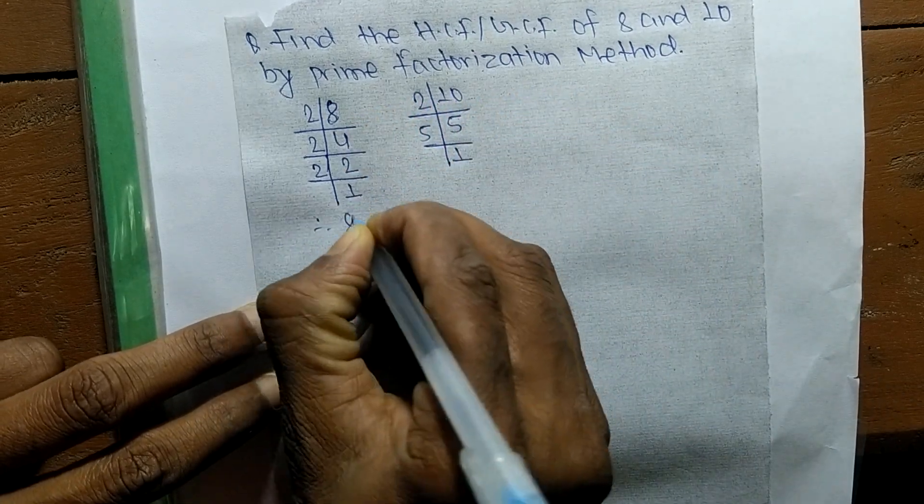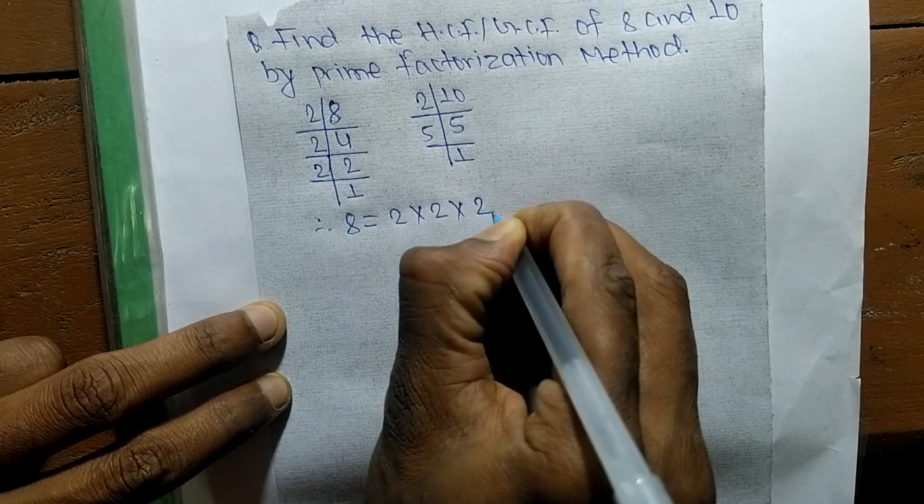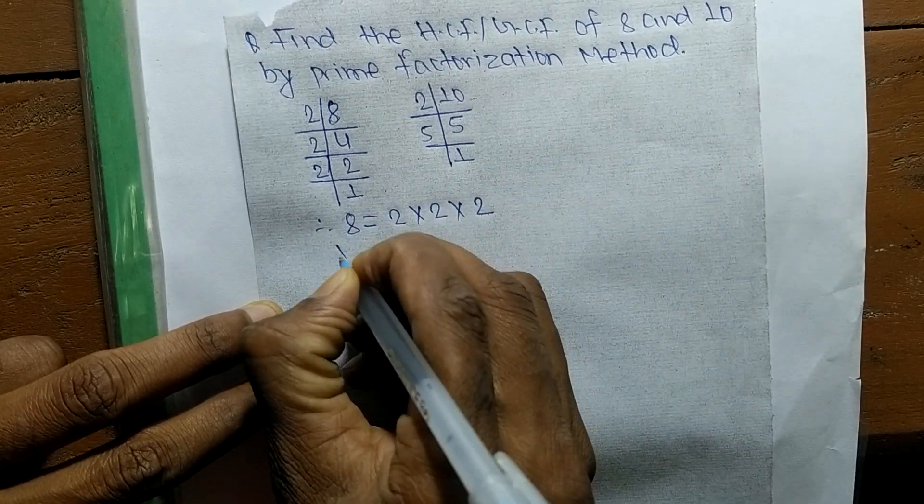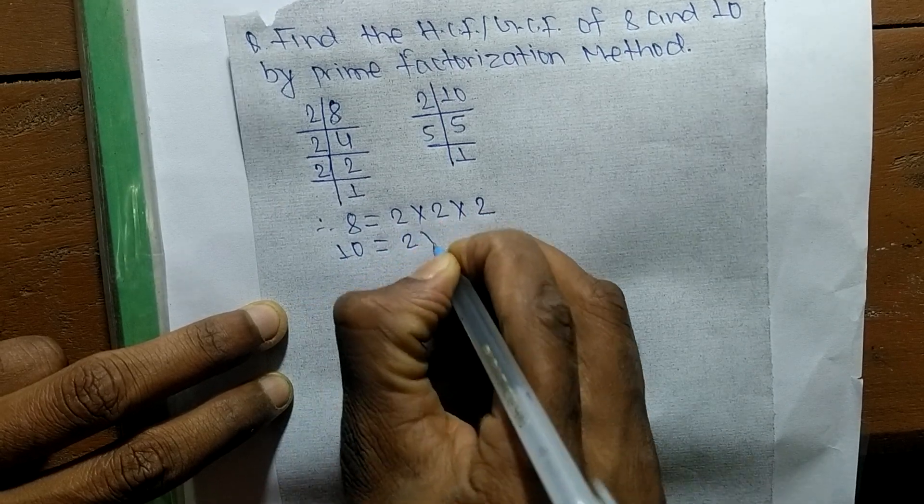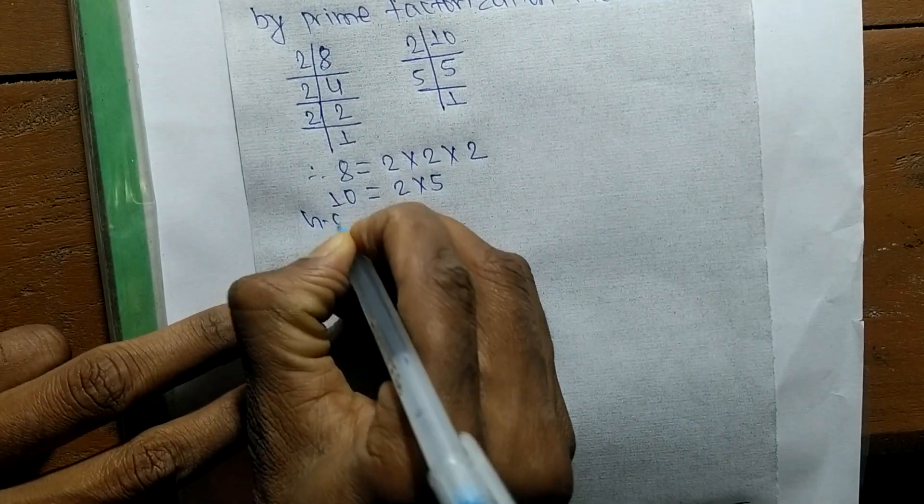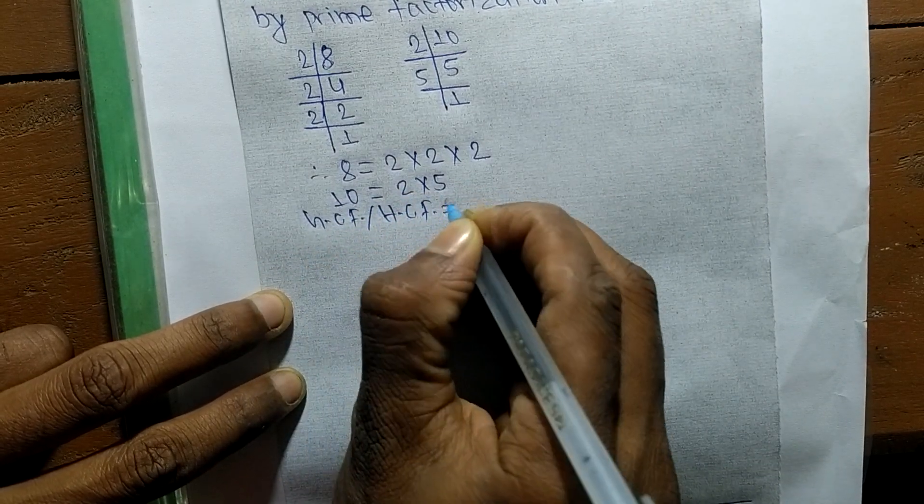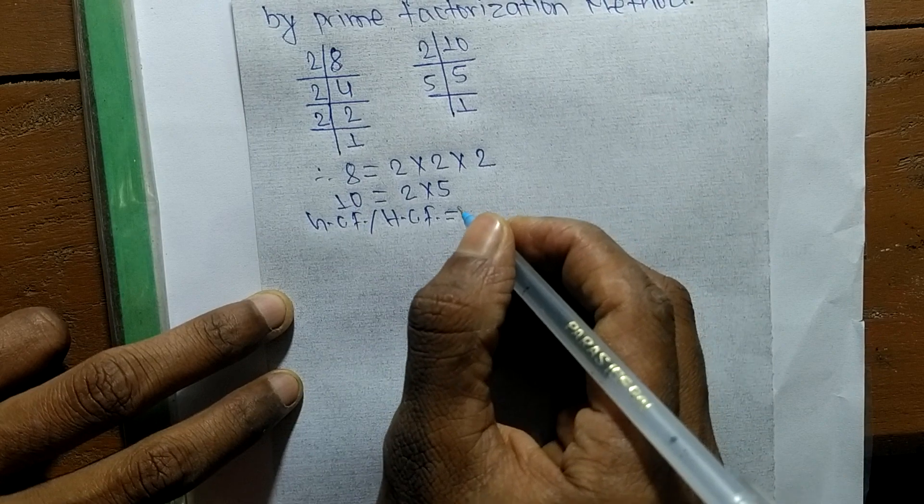we can write 8 equals 2 times 2 times 2, and 10 equals 2 times 5. So GCD or HCF equals... now we have to find out the